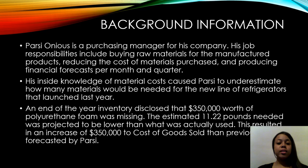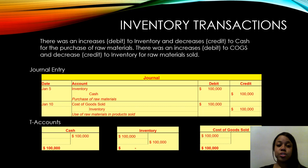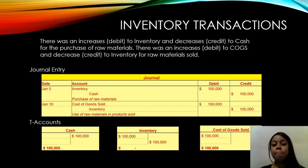That line launched last year, and an end-of-the-year inventory disclosed that three hundred and fifty thousand dollars worth of polyurethane foam was missing. The estimated 11.22 pounds needed was projected to be lower than what was actually used. This resulted in an increase of three hundred and fifty thousand dollars to cost of goods sold, more than previously forecasted by Parsi.